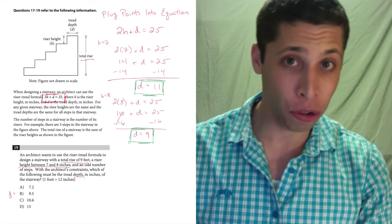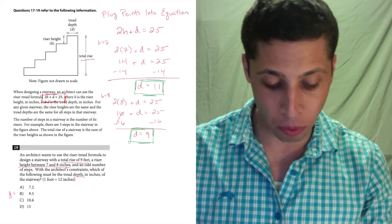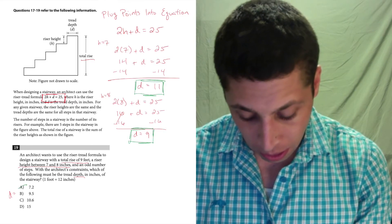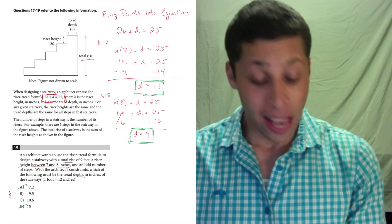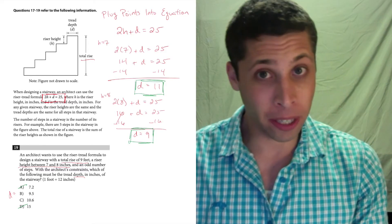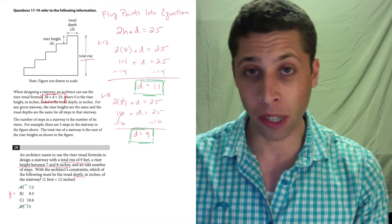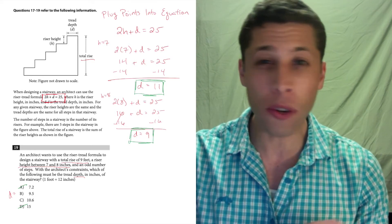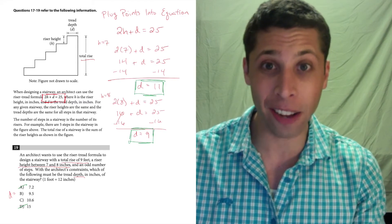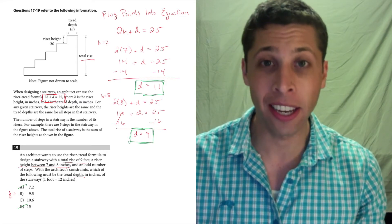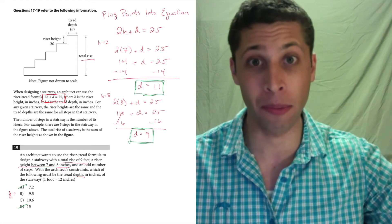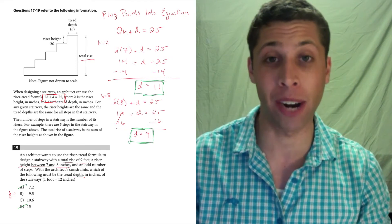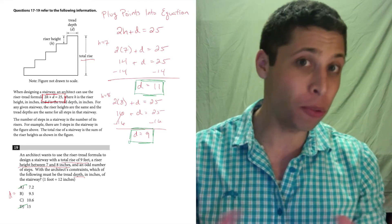Since my answer choices are values of d, anything that's greater than 11 or lower than 9 is wrong. So that gets rid of two choices right away. That may not seem like a big deal, but if you can get rid of two choices pretty quickly, you've just doubled your odds of getting this very hard question right. Even if you have no idea what to do from here, you've just gotten down to a 50-50 shot. That's still really good because you go from getting a fourth of those questions right to a half of them right. That adds real points.